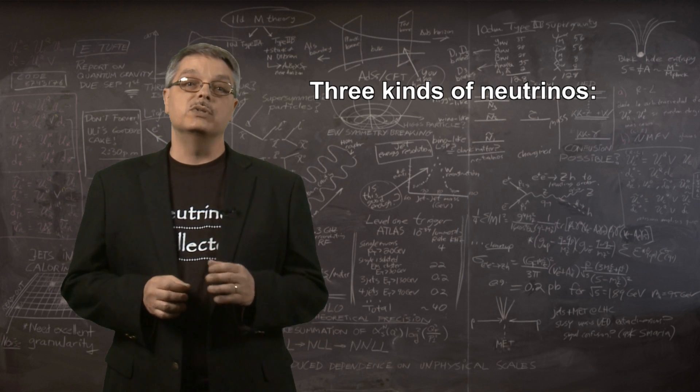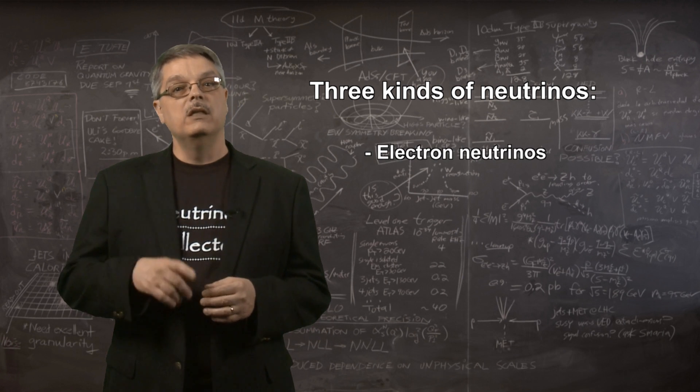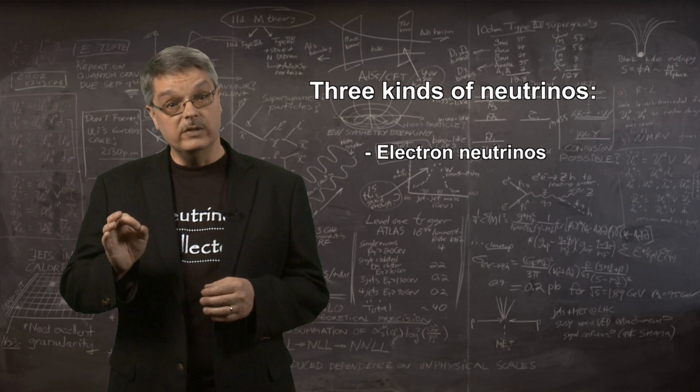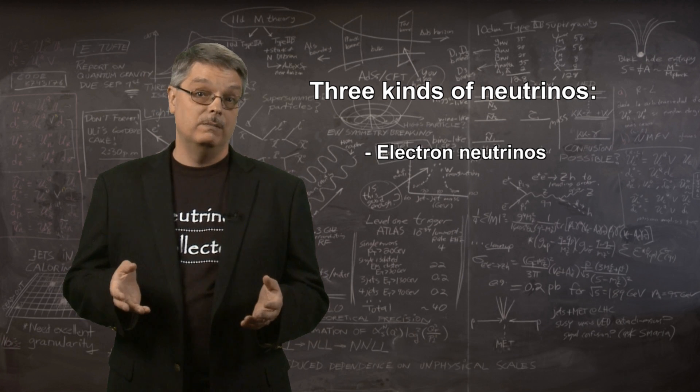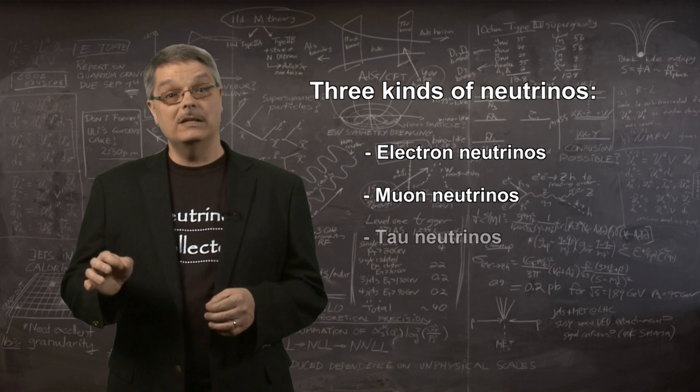One class of neutrino is associated with electrons and is called the electron-type neutrino. The other two kinds of neutrinos are associated with cousins of the electron, the muon and the tau. Accordingly, these other types are called muon neutrinos and tau neutrinos.